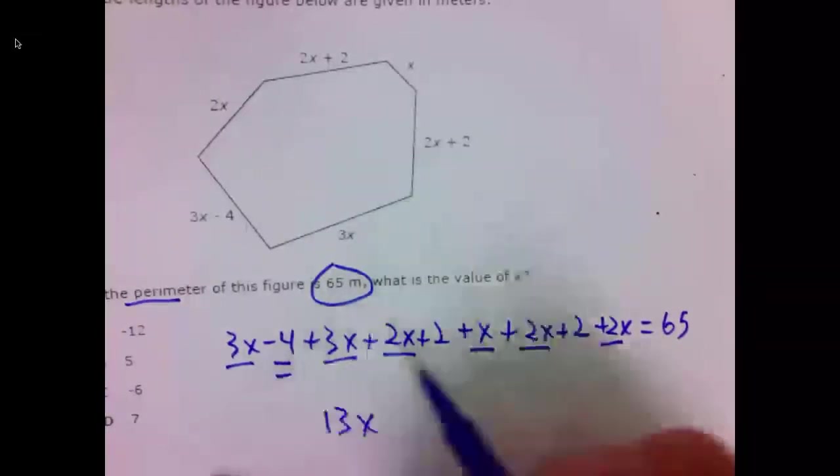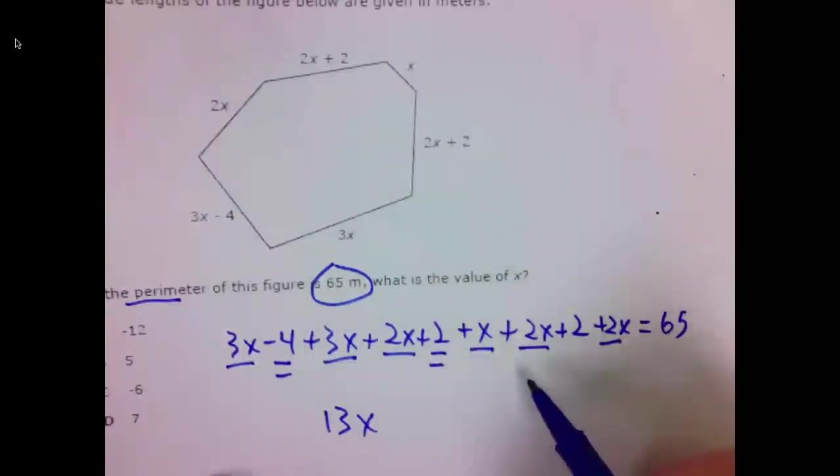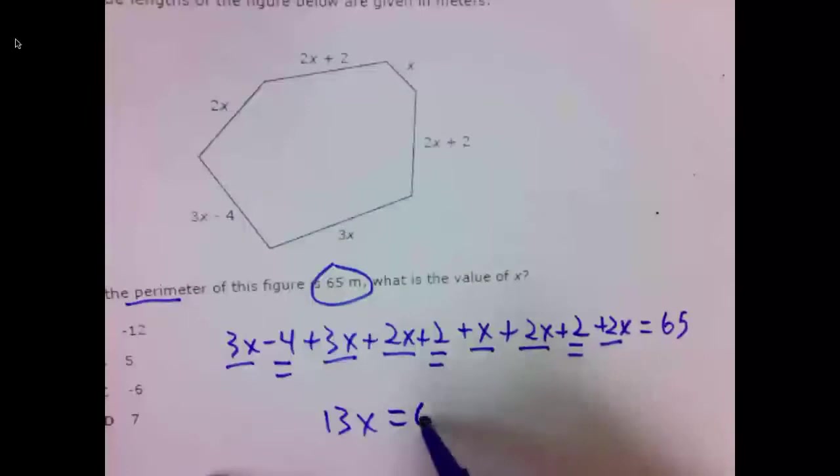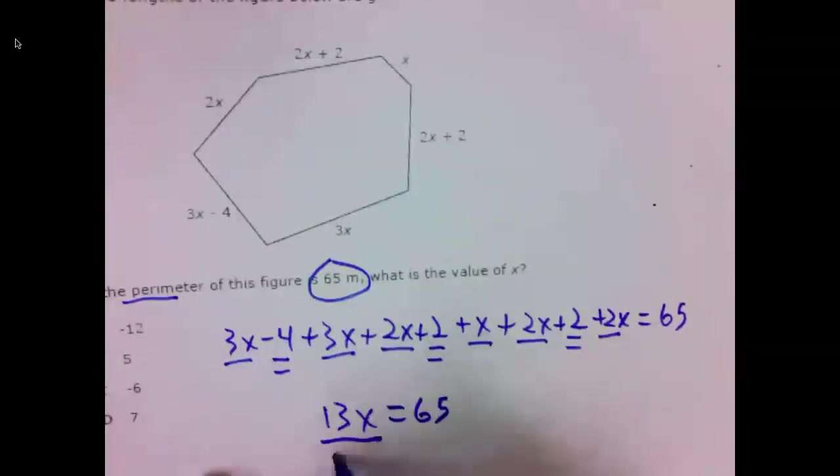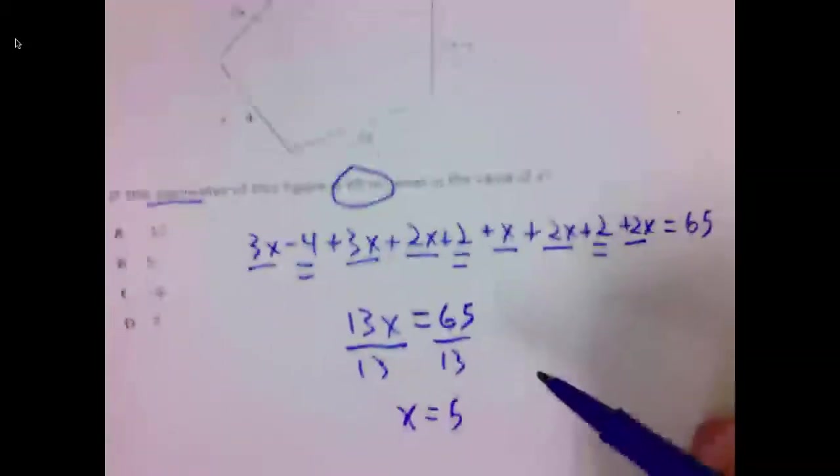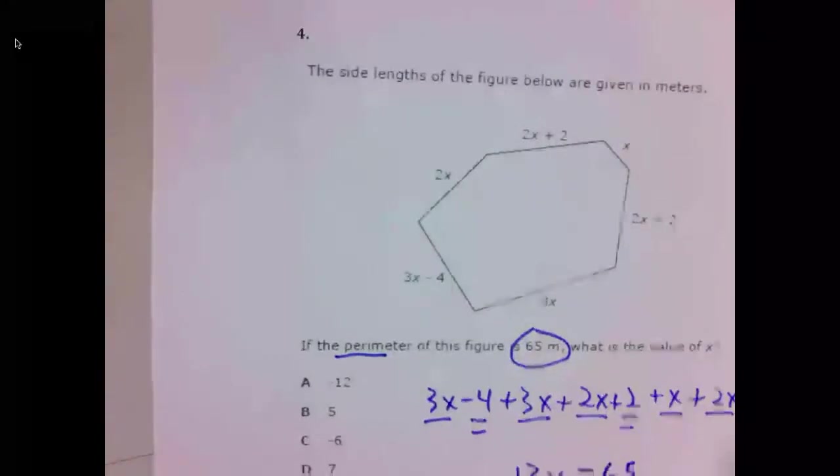Negative four. Plus two is a negative two. Plus two more. That's zero. So we have 13X is equal to 65. Dividing by 13 on both sides. X is five. Number four is B.